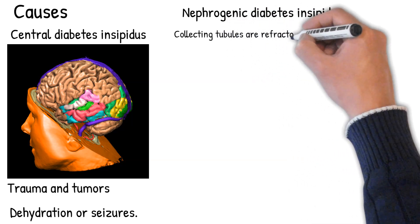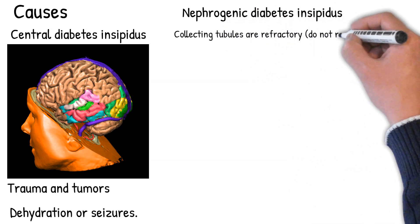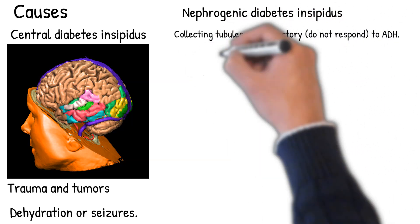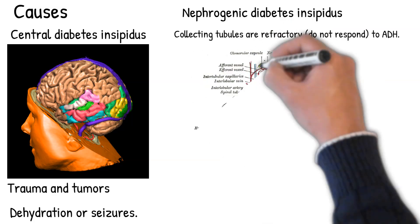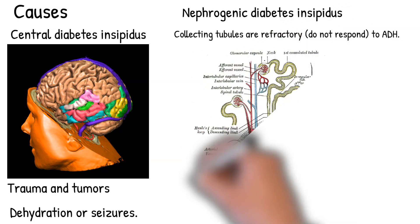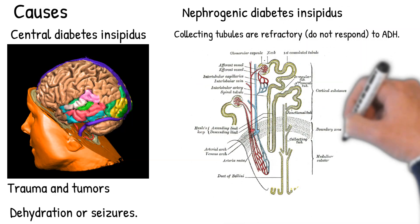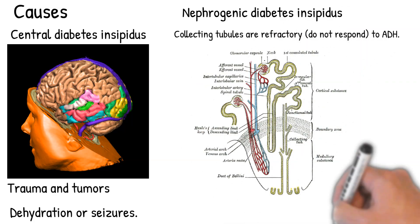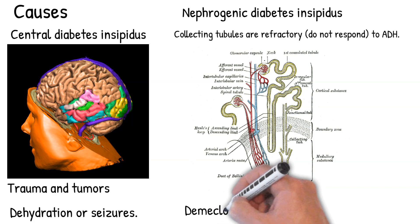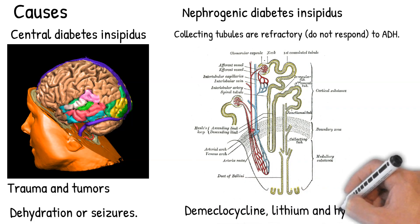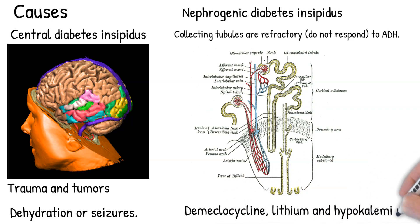In nephrogenic diabetes insipidus (NDI), the collecting tubules are refractory — they do not respond — to ADH. Common causes of NDI include drugs such as demeclocycline and lithium, as well as hypokalemia.